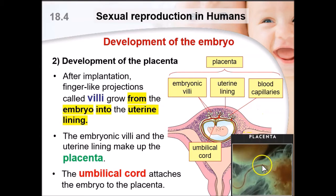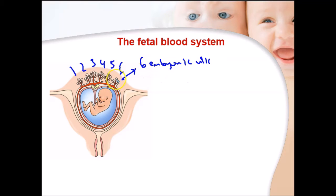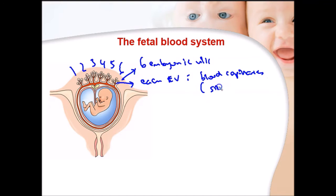Looking at the diagram, the curvy structure is the umbilical cord, and the placenta is the organ to the side. The small structure is the head of the developing fetus. Now we're going to look at a magnified version of one of the embryonic villi — you can see there are about six embryonic villi in the diagram, and each one contains fetal blood capillaries.